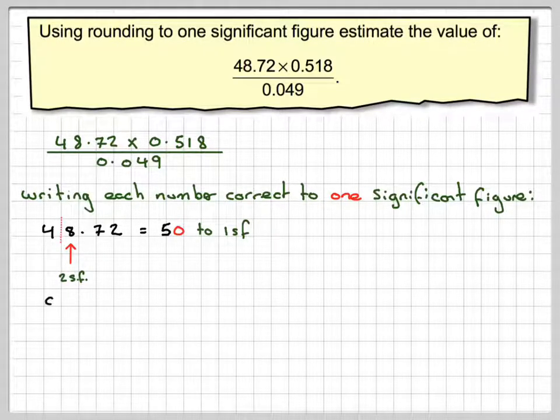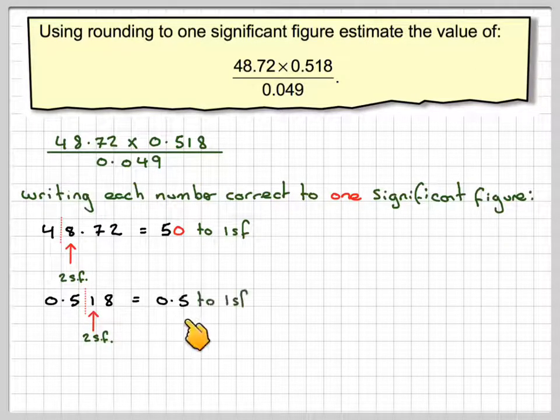Now we're going to do 0.518. So remember that 0 is not significant when we've got decimals. The 5 is the first significant figure. The 1 is the second. So that 1 is going to have no effect on the 5. So that becomes 0.5 to 1 significant figure.